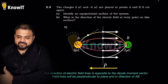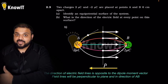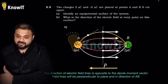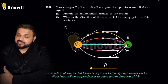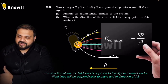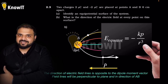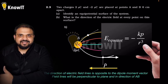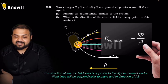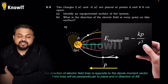Note here: on the equatorial plane, the dipole moment and electric field are always in opposite directions. This is confirmed by the formula for electric field on the equator of a dipole: E = −kp/r³, where the negative sign indicates the field is opposite to the dipole moment vector.